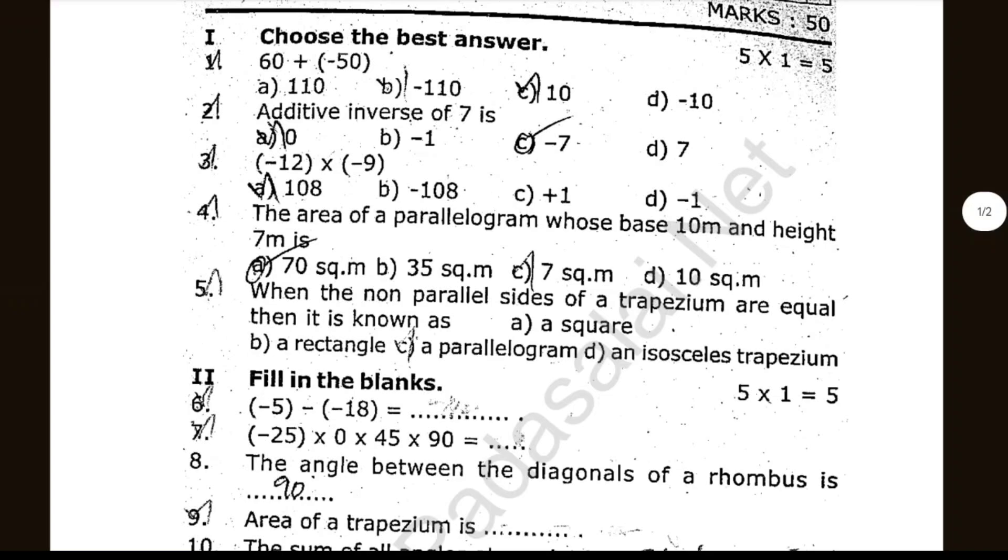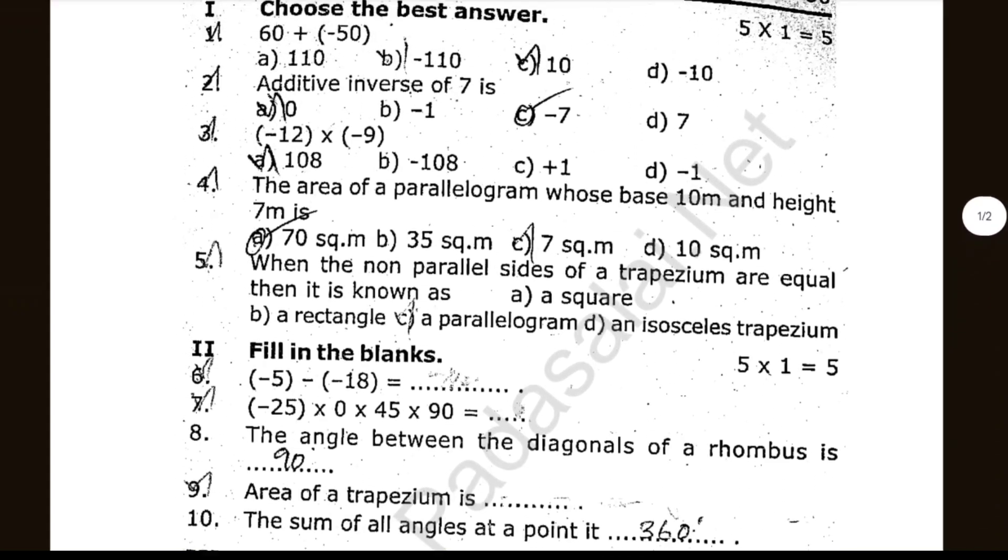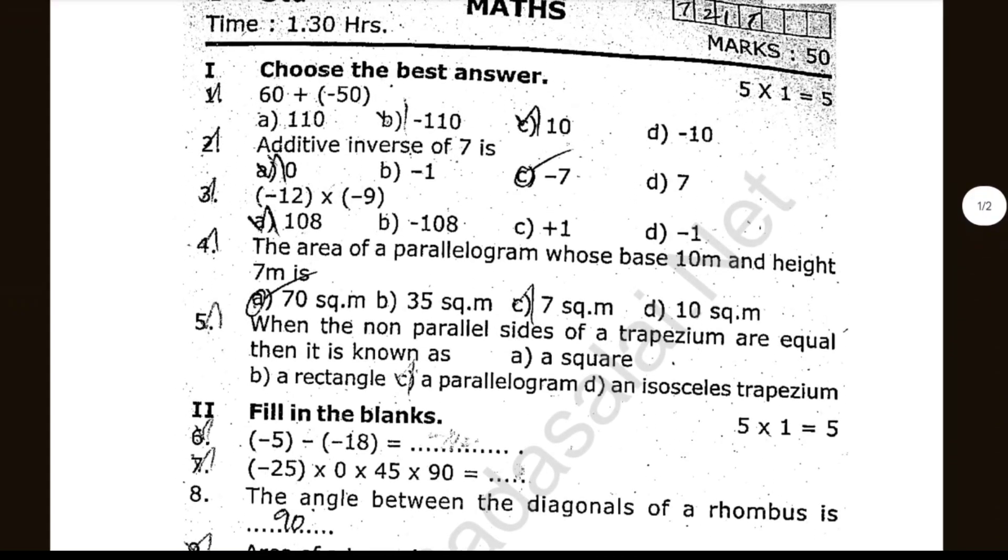First, choose the best answer, fill in the blanks. 60 plus minus 50, additive inverse of 7 is... The area of a parallelogram whose base is 10m and height 7m is dash.